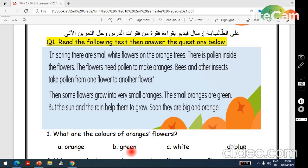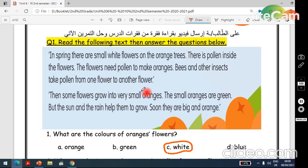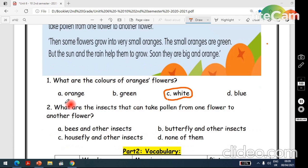Orange, green, white, or blue? Yes, white. The answer is white. Circle C, white. Okay, here, look. In spring there are small white flowers. Now 2, what are the insects that can take pollen from one flower to another flower? Bees and other insects, butterfly and other insects, housefly and other insects, or none of them.